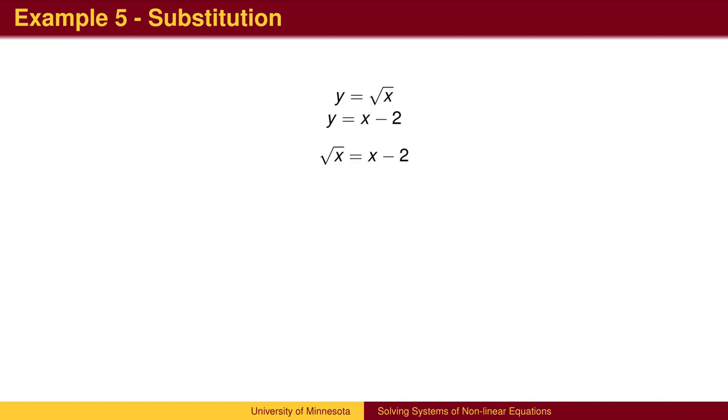We can substitute, square both sides, get one side equal to zero, factor, and solve for x. Plugging these values into the second equation gives two answers.